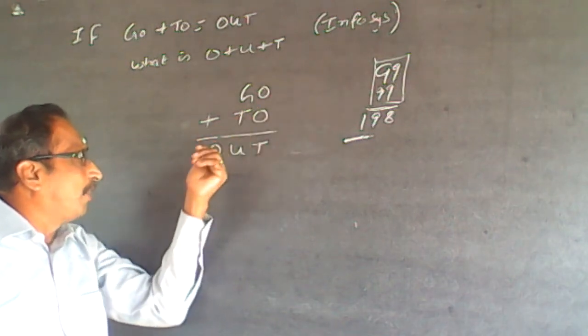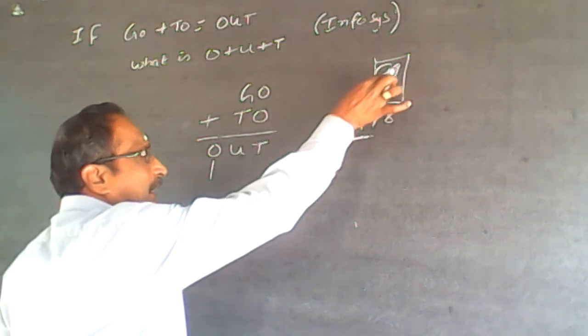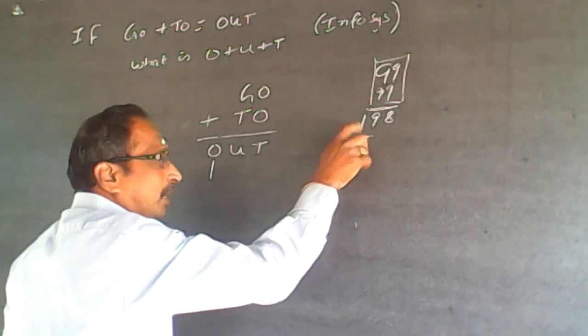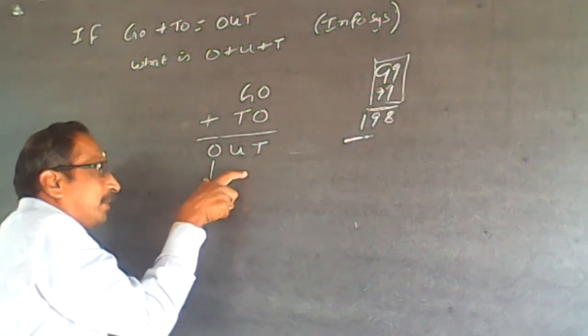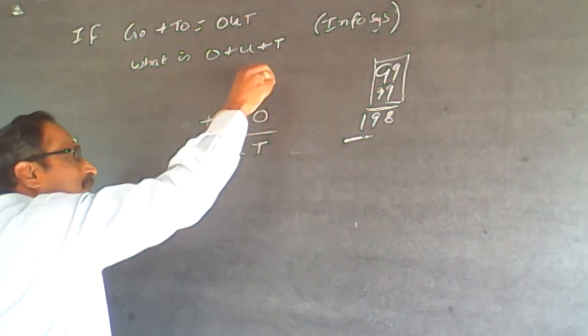Therefore, wherever I have got O, it can only be 1. Because I have taken the largest two-digit number in both cases, the maximum carryover is only 1. So, if I am getting a three-digit number here, O can only be 1. Now, substitute wherever you have got O.